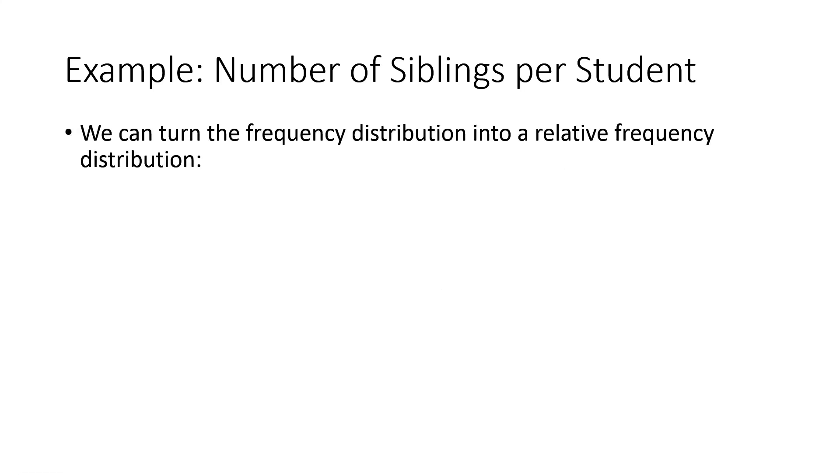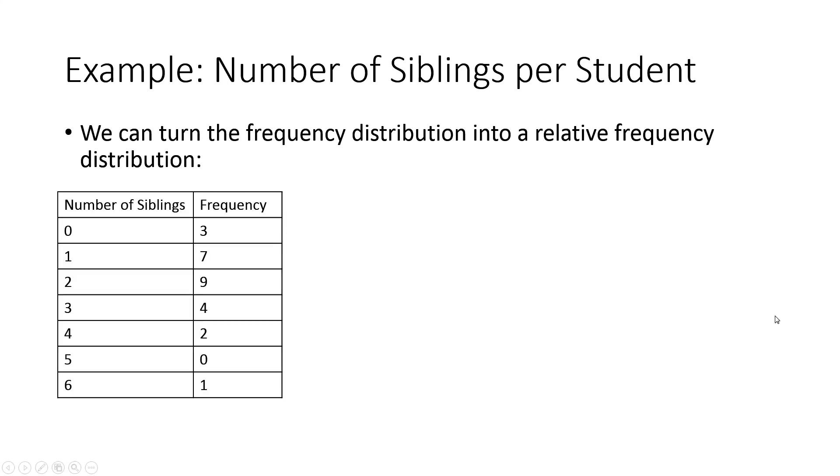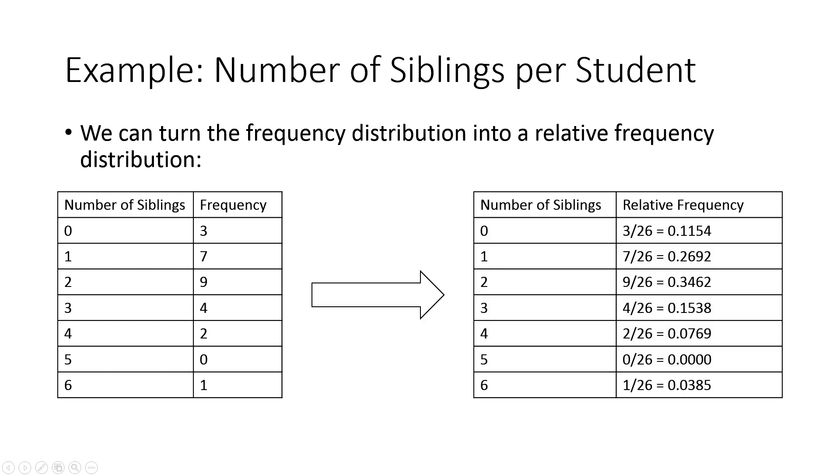So we could take that frequency distribution and we could actually turn it into a relative frequency distribution. So that's something that we practiced in chapter 2. For example, you can see here I have all my frequencies, and then we can divide each of those frequencies by the total. So if there's 26 students, so 3 here, we would do 3 divided by 26, and that would be 0.1154. And I do that for each of these.